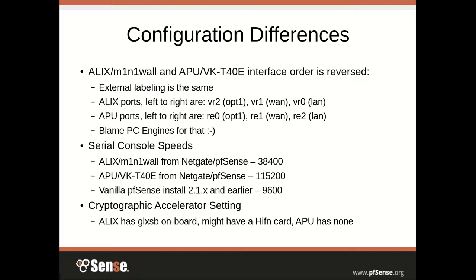Another big difference is the cryptographic accelerator setting. The ALIX had a GLXSB (Geode-LX Security Block) on board, which could accelerate AES-128 ciphers. The APU currently does not have any viable accelerator, but most of the time it's not needed. Newer hardware like the Rangeley chipset-based units — the 7551 and C2758 in our store — have AES-NI and QuickAssist, which PFSense 2.2 will take big advantage of. We've had people running near gigabit on IPSec on those. If you really need cryptographic acceleration, look toward the C2758 rather than the APU.